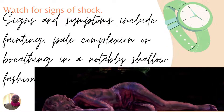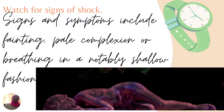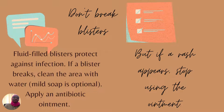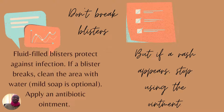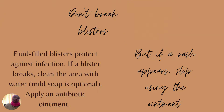Watch out for signs of shock. Signs and symptoms of shock include fainting episodes — the person may appear pale, or be breathing in a notably shallow fashion. If there are fluid-filled blisters, they are actually protecting against infection in the short term, so don't break the blisters. However, if a blister breaks, clean the area with water, plus or minus mild soap, and apply an antibiotic ointment if available. If a rash appears after applying the antibiotic ointment or any other ointment, please stop using it.